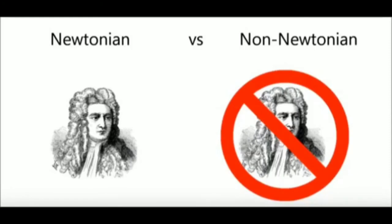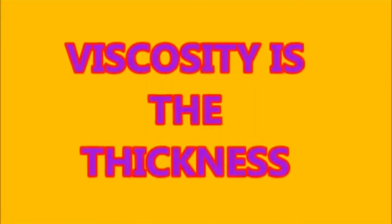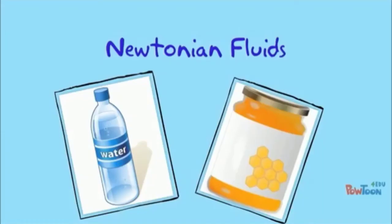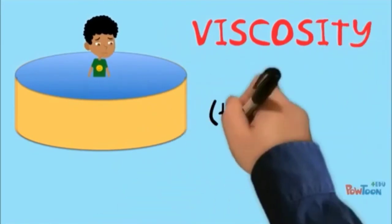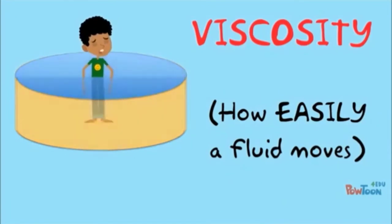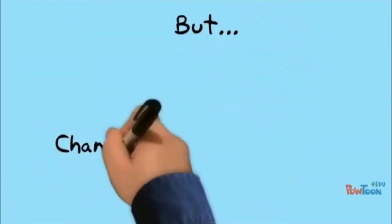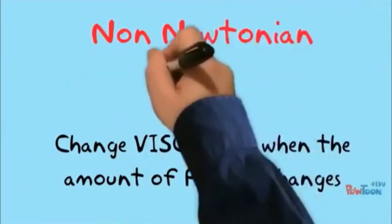Newton's law of viscosity is only followed by Newtonian fluids; non-Newtonian fluids do not behave according to this law. Viscosity is informally known as thickness — for example, honey is thicker than water. Newtonian fluids like water and honey don't change their viscosity no matter how much force is applied. Most fluids follow this rule, but non-Newtonian fluids change their viscosity when the amount of force or pressure changes — examples include toothpaste and ketchup.